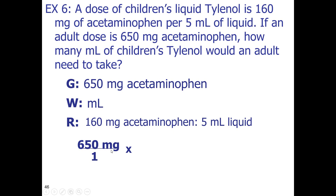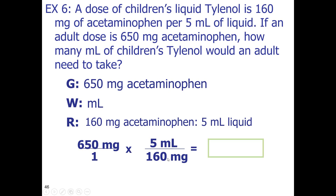I can look for that milligrams unit and put it in the bottom. So here's my ratio: 160 milligrams per 5 milliliters. I can go ahead and multiply in my calculator 650 times 5 divided by 160, and I get, rounded to 2 sig figs, 20 milliliters.